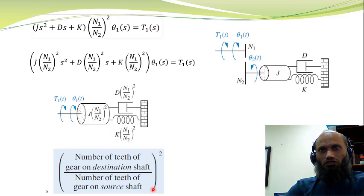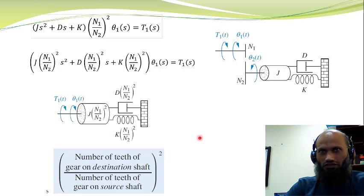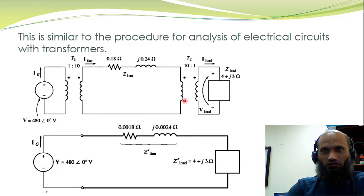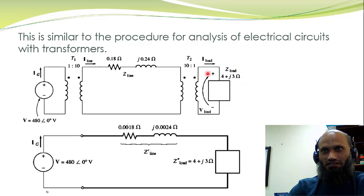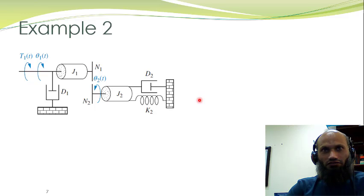Thus, to obtain a mathematical model for systems with gears, the procedure is: reflect all impedances from one side of the gear to the other side, then obtain a system without gears for which the mathematical model is easy to derive. This is analogous to what is done for transformers: all impedances from the secondary side are referred to the primary side by multiplying by the square of the turns ratio.